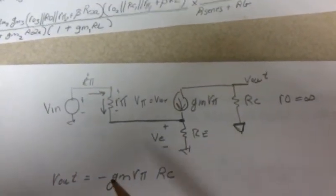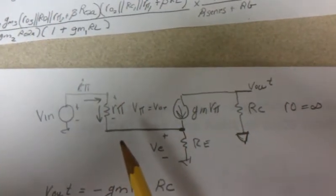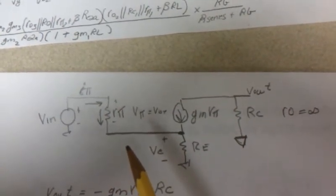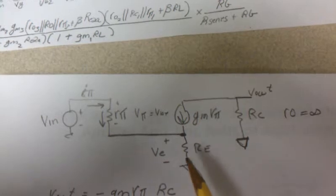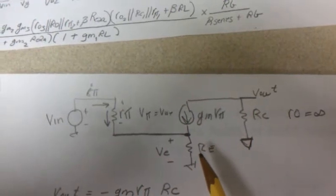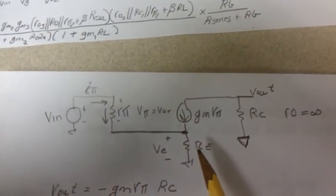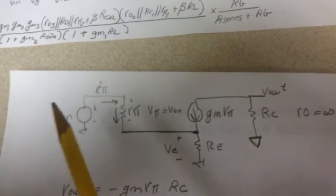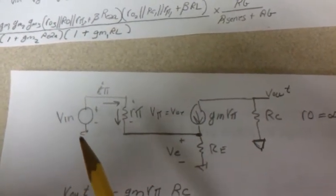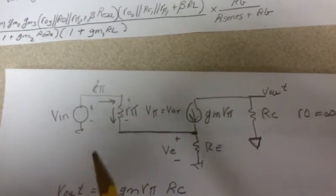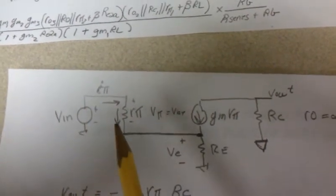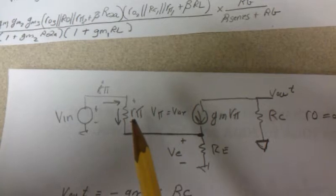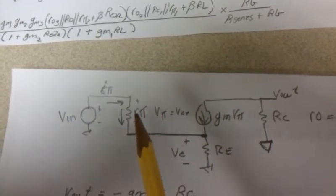Here we have the small signal model of the common emitter BJT where the emitter resistance hasn't been shorted out. We're neglecting the series resistance and any biasing transistors. We have the R pi model where the input resistance due to the leakage current to bias the transistor occurs and it's called R pi.